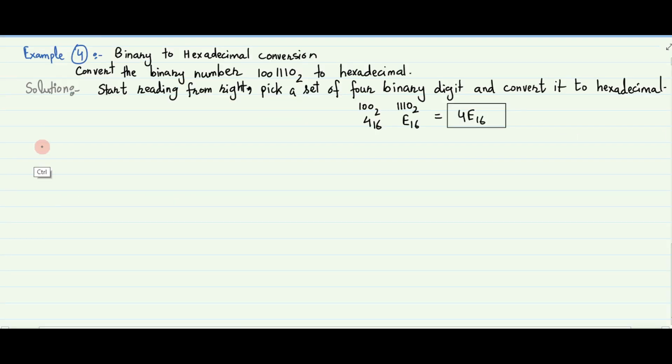Example 4 is binary to hexadecimal conversion. The binary number 10011110 base 2 is converted to hexadecimal. Starting from the right, pick a set of 4 bits and convert it to its hexadecimal equivalent, then pick the next 4 bits and convert, and so on. From the right, the first set of 4 bits is 1110 base 2, which is equivalent to E base 16. The next set of 4 bits from the right is 1001 base 2, which is equivalent to 4 base 16. Hence, the binary number is equivalent to 4E base 16.